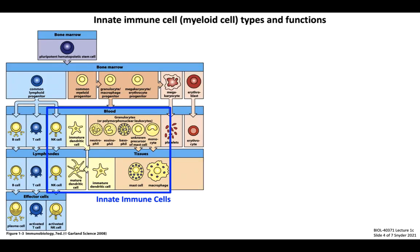To understand how innate immune responses are mediated, we need to learn about the specific cells that execute innate immune functions. Starting with a differentiation figure from the textbook: all immune cells, which we also call leukocytes, are derived from a pluripotent hematopoietic stem cell population found in the bone marrow. These stem cells give rise to two lineages — the common lymphoid progenitor, yielding T, B, and NK cells, and the common myeloid progenitor, yielding several myeloid cell types comprising key innate immune cells, including monocytes, macrophages, dendritic cells, neutrophils, and others.